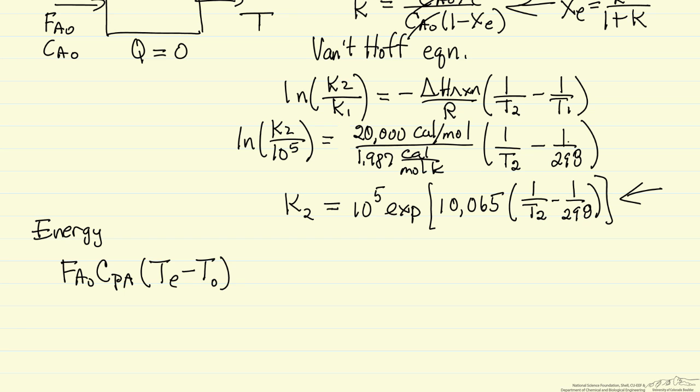So this is the energy to heat up the feed to the final temperature. Since the heat capacities of A and B are the same, then I can just write everything in terms of heat capacity of A. And the reason the temperature increases is I have a heat of reaction and then some fraction of that material A flowing in is converted.